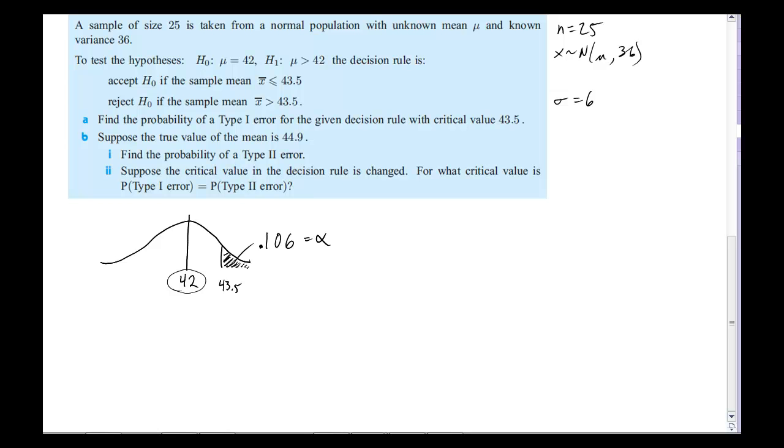Now, the question goes a little further and says suppose the true value of the mean is 44.9. So the real mean is over here at 44.9. If we know that the variance is 36, which means the spread isn't going to change at all, it should look more or less the same. I'm not an amazing artist, but that one's not so bad. Anyway, the distribution is the same.